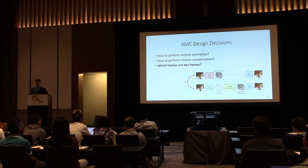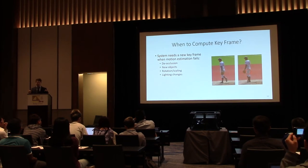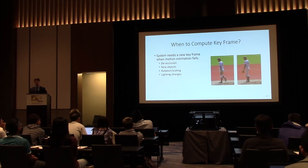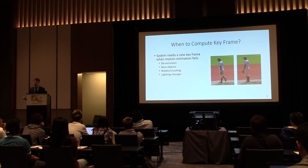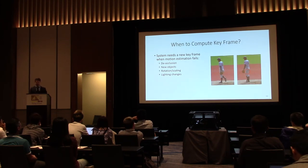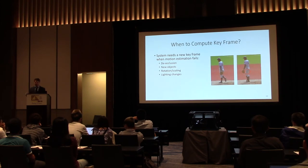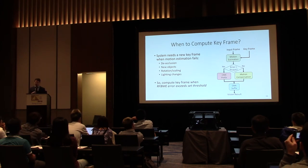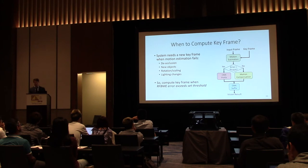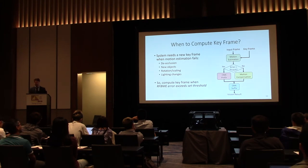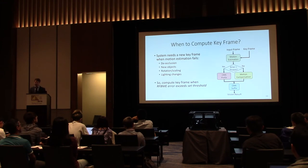Determining which frames should be keyframes is important because the system can fail for many reasons — de-occlusion, new objects. For example, when a man's hand moves and exposes more of his leg, those pixels did not exist in the reference frame and cannot be produced. We use RFBME's absolute pixel difference error from block motion estimation, compare it against a threshold chosen from profiling data using the classic training-validation-testing split. Our validation set is used to choose a threshold with a specific acceptable degradation in accuracy.